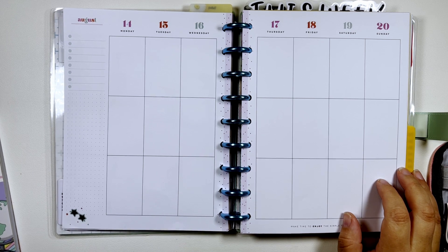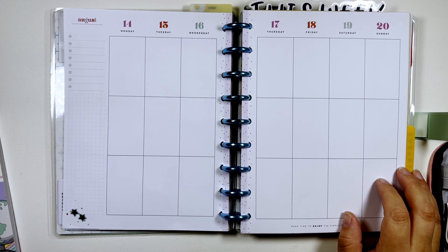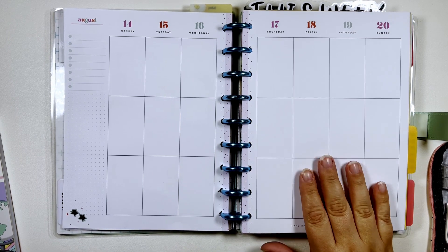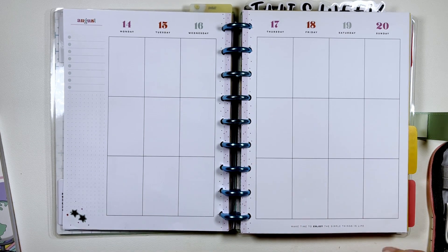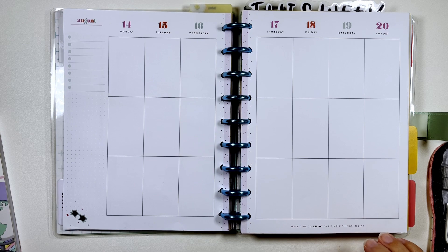Hi, my name is Chelsea, welcome back to my channel. This is Be Sweet Stand Tall and Plan. Today I'm going to be planning in my classic vertical Happy Planner for the week of August 14th through the 20th.